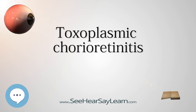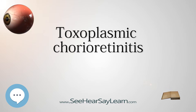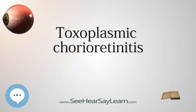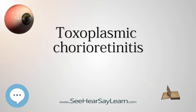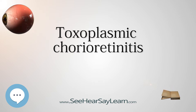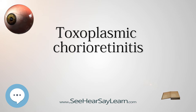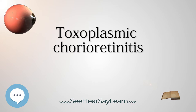Prevention: Toxoplasma infection can be prevented in large part by cooking meat to a safe temperature sufficient to kill Toxoplasma; peeling or thoroughly washing fruits and vegetables before eating; cleaning cooking surfaces and utensils after they have contacted raw meat, poultry, seafood, or unwashed fruits or vegetables; pregnant women avoiding changing cat litter or, if no one else is available, using gloves and then washing hands thoroughly; and not feeding raw or undercooked meat to cats to prevent acquisition of Toxoplasma.